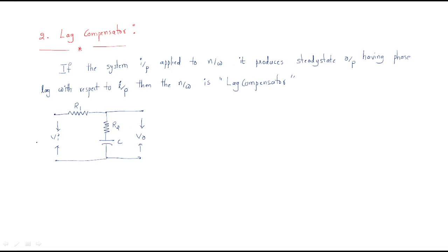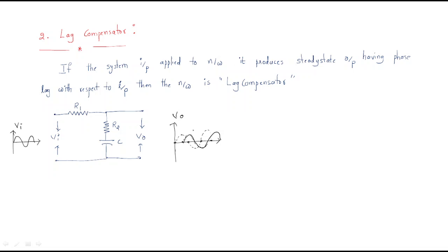For example, we have an input signal VA, and the output voltage will have some lag. Lag means the input leads — it starts first — and the output follows after, say 90 degrees. So we give this type of input and get this type of output, but the output is the steady-state output. Then the system is called the lag compensator.